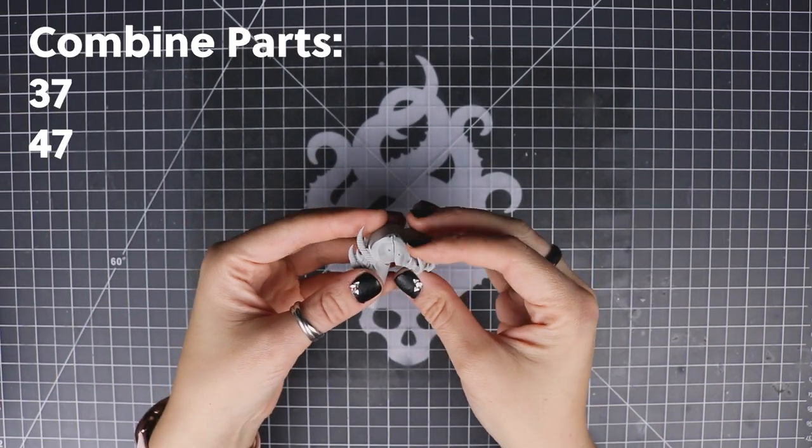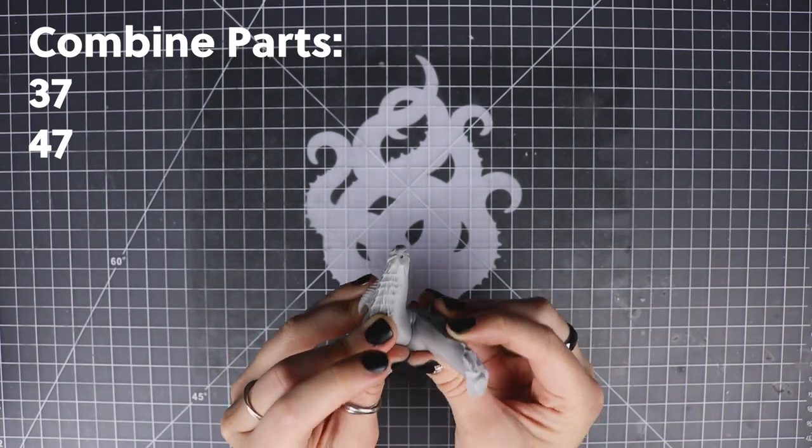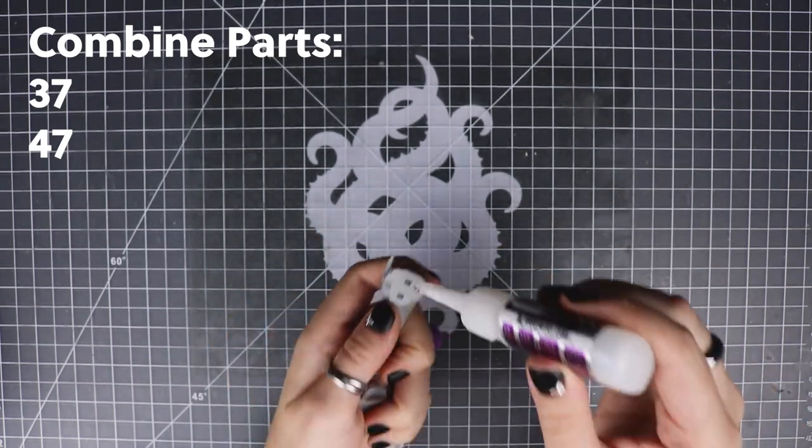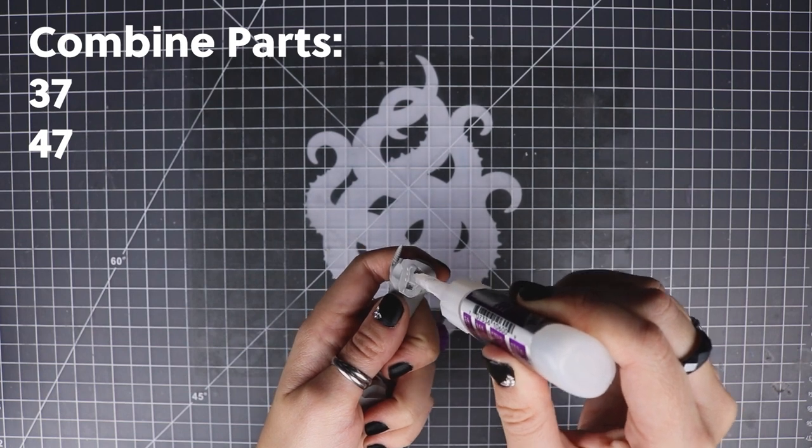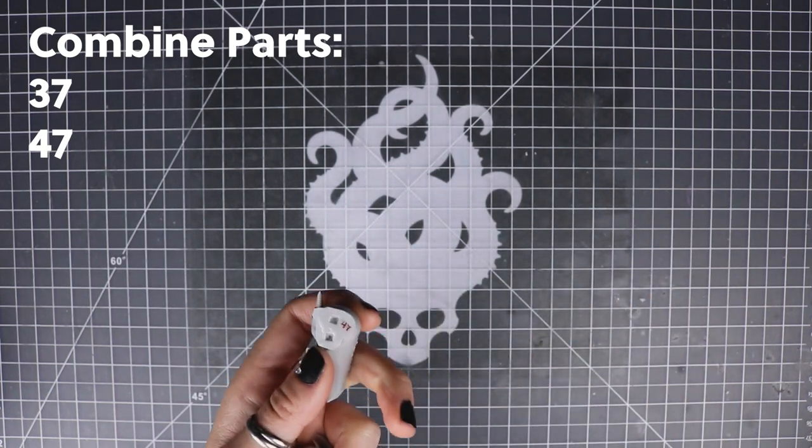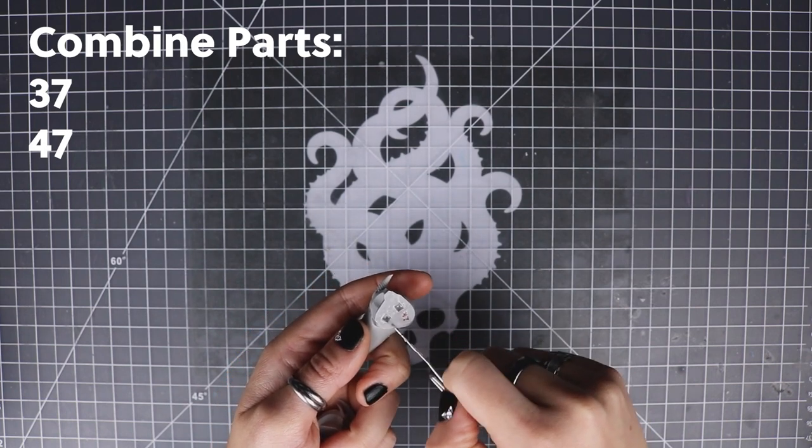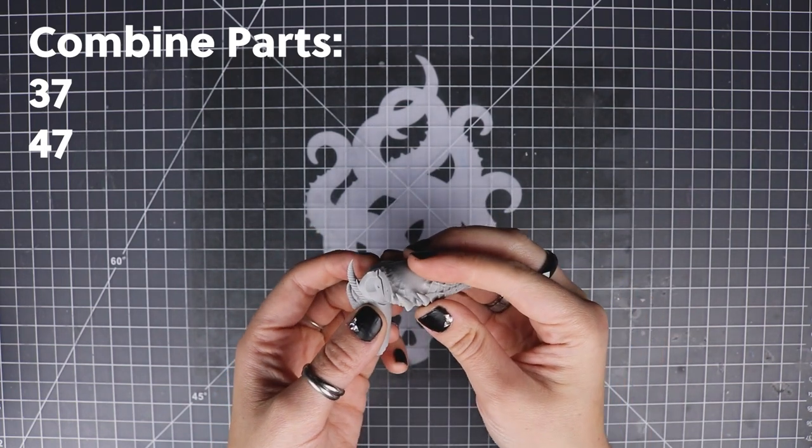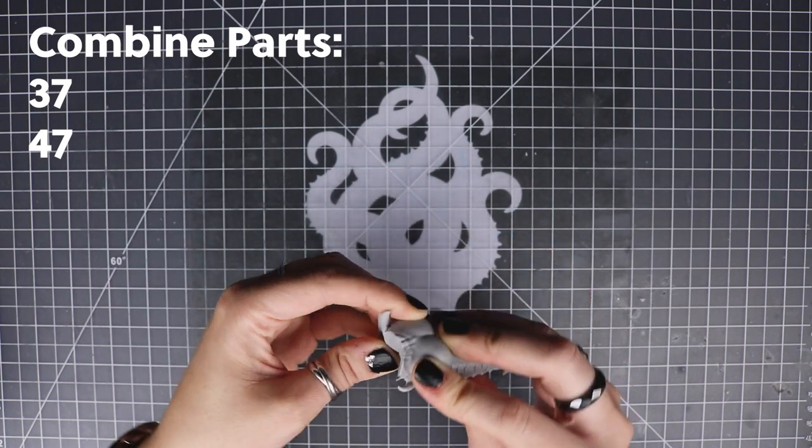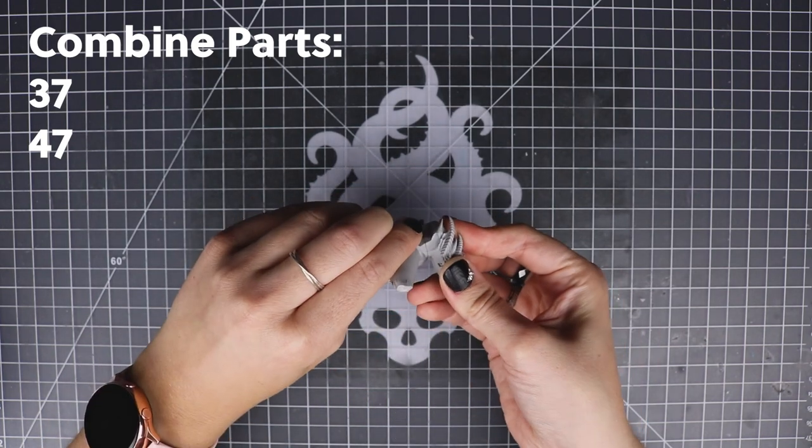Next we're putting together the two thighs. Make sure that you clean up the middle space really well and clean where her torso will go really well before you attach this. I even test fitted her torso before I glued. Any point where you're connecting three parts should always be tested.